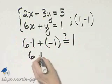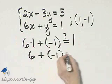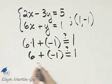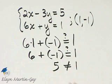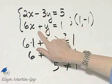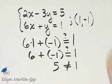6 times 1 is 6, plus negative 1. Is that equal to 1? Well, I have 5. 5 is not equal to 1, so it's not a solution of this equation, which means